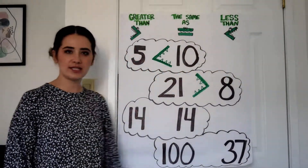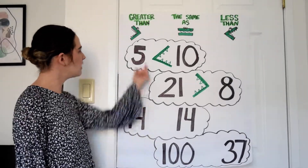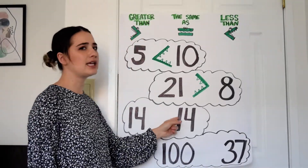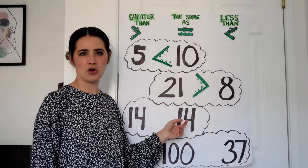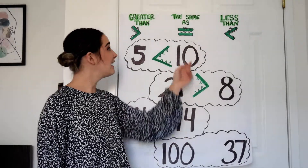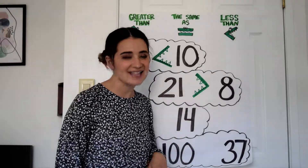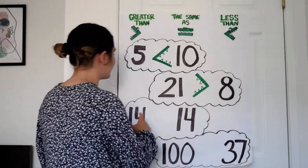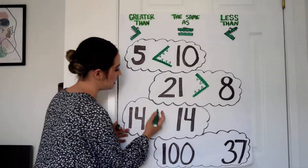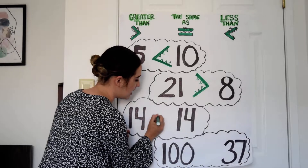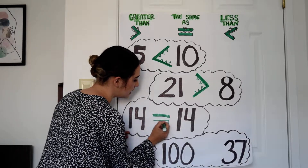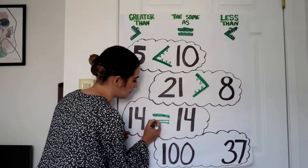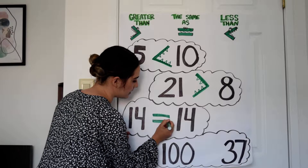Down here: fourteen and fourteen. Is fourteen greater than fourteen? Is fourteen less than fourteen? No. Is fourteen the same as fourteen? Yes — those are the same numbers. So we're going to use our equal sign, because equal means the same as. When you see an equal sign, that's what it means.